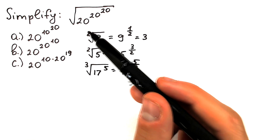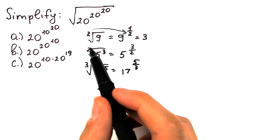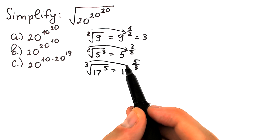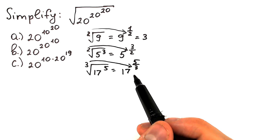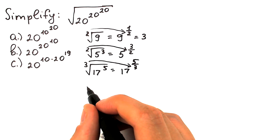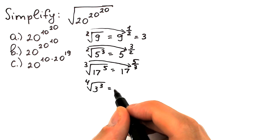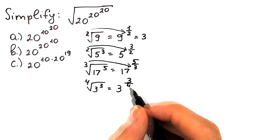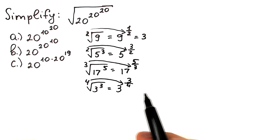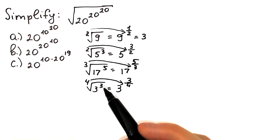We divide by the power of the root. For square root, we divide by 2. For cube root, we divide by 3. For a fourth root, we get a power of 1/4. For example, the fourth root of 3 cubed can be written as 3 to the power 3 over 4. So we always divide by the index of our root — that is the key rule.